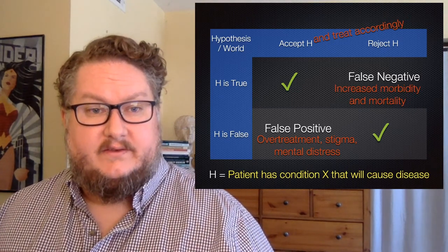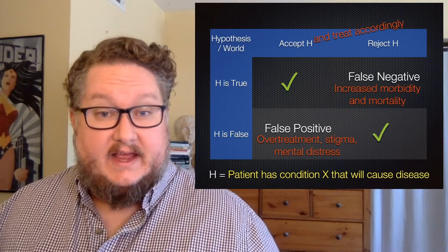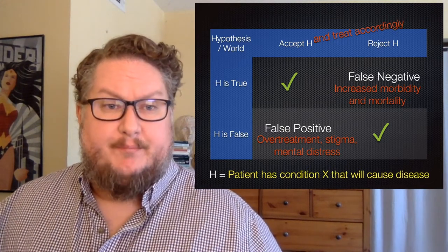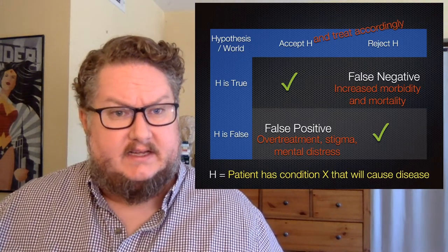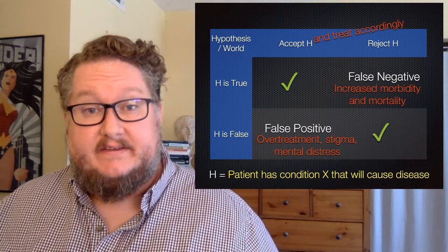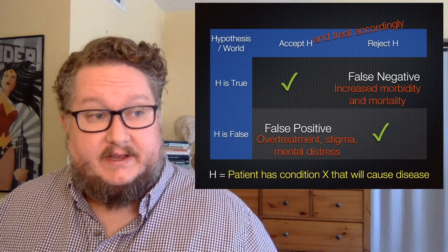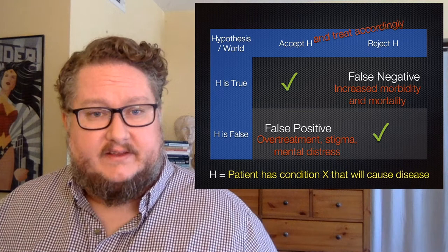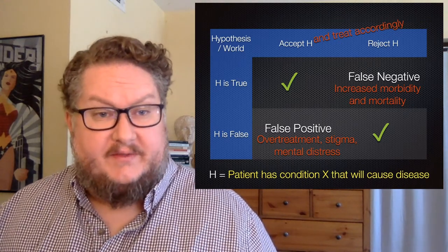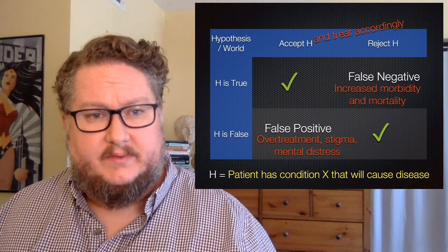Similarly, for a false negative error — if we tell you you're fine but you're not — we're risking increased morbidity and mortality. These are the kinds of errors that need to be balanced in the design of medical screening techniques and technologies. In the case of cancer screening, for example, you might start with an early detection test that minimizes false negative errors but has many false positives, as long as you can follow that up relatively quickly with a second test that is more expensive or difficult but has a much lower false positive rate. There are both economic aspects to these choices, as well as social and ethical consequences to human well-being at stake.